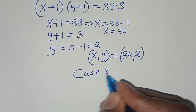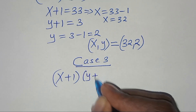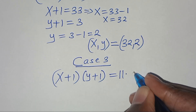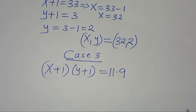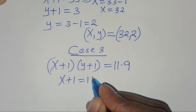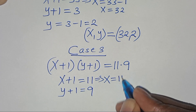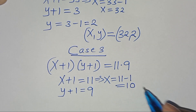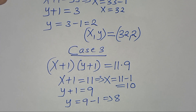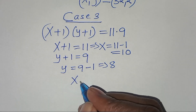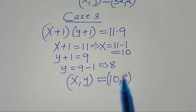Case 3: x plus 1 times y plus 1 equals 11 times 9. So x plus 1 equals 11 and y plus 1 equals 9. This implies x equals 11 minus 1, which is equal to 10, and y equals 9 minus 1, which is 8. So (x, y) equals (10, 8). This is the solution for case 3.